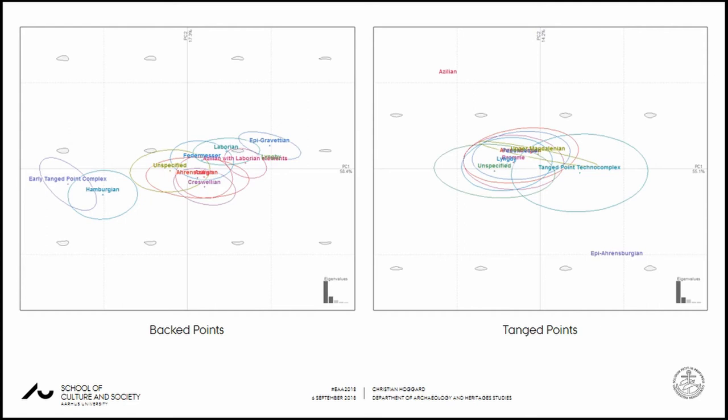At the ATU2 level — the higher analytical units — we see some element of structure within the backed points, as demonstrable on the left: the backed points belonging to the Hamburgian and the early tanged point complex are distinguishable. We see overlap in the variance of the Laborian versus the Azilian with Laborian elements, and significant homogenisation between the Federmesser, the Ansburgian, and the Azilian variance. It's perhaps unsurprising to see a lack of distinction between the Azilian and the Federmesser, given that the two terms are often used interchangeably.